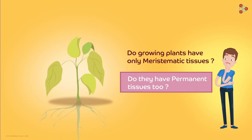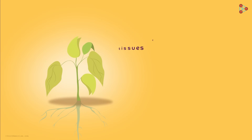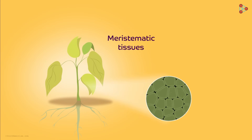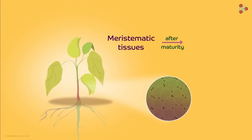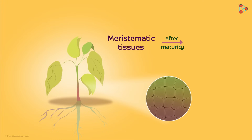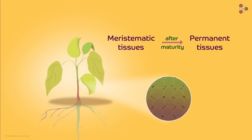I am sure this is a mind-boggling question, but the answer is actually quite simple. When meristematic tissues have divided and reached the final stage of division, they attain maturity. After this point, these tissues do not divide anymore. They only get differentiated into different parts, and these non-dividing tissues then become permanent tissues.